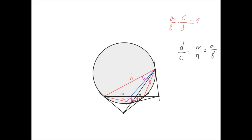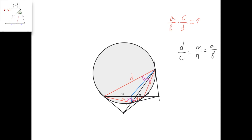Here's one more property of the harmonic quadrilateral. Suppose you take the angle bisector of one of the angles in the harmonic quadrilateral and intersect it with this diagonal at this point. And suppose this distance is m and this distance is n. Then, by the angle bisector theorem, we know that d divided by c equals m divided by n.